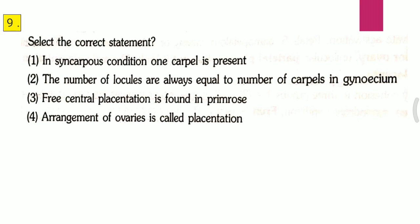Question nine: Select the correct statement — first, in syncarpous condition one carpel is present; second, the number of locules are always equal to number of carpels in gynoecium; third, free central placentation is found in primrose; fourth, arrangement of ovaries is called placentation. The correct answer is the third one, that is free central placentation is found in primrose.